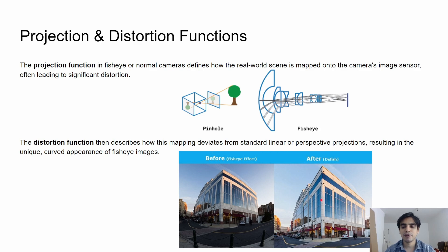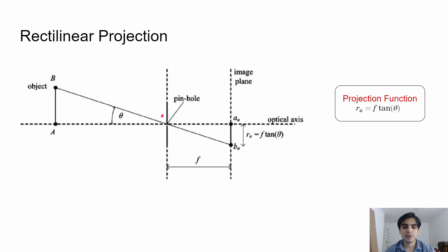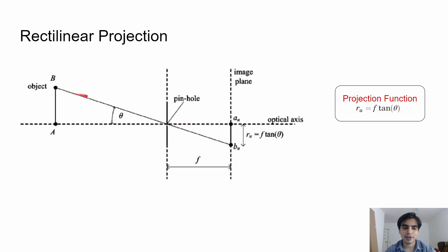First, we will look at what is the linear or rectilinear projection. In a simple pinhole camera, when you take a picture of some object — for example, point B — the light from this object travels in a straight line and passes through the pinhole, then hits on the image plane at a certain point. The angle between the optical axis and the ray of the object is denoted by theta, which is also known as the angle of incidence. The distance between the pinhole and the image plane is the focal length, represented by f.